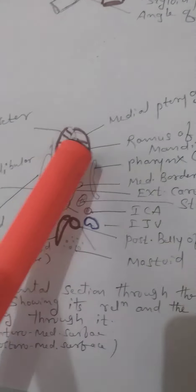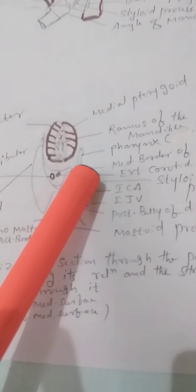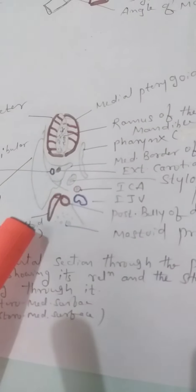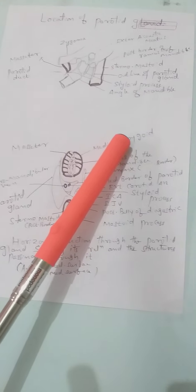There is a superior border. Anteriorly and medially, you can see the masseter muscle. There is the ramus of the mandible and the medial pterygoid anteriomedially. The medial border is formed by the lateral wall of the pharynx. The posterior border is formed by the sternomastoid. The anteriomedial surface has the masseter muscle, ramus of the mandible, and medial pterygoid muscle.